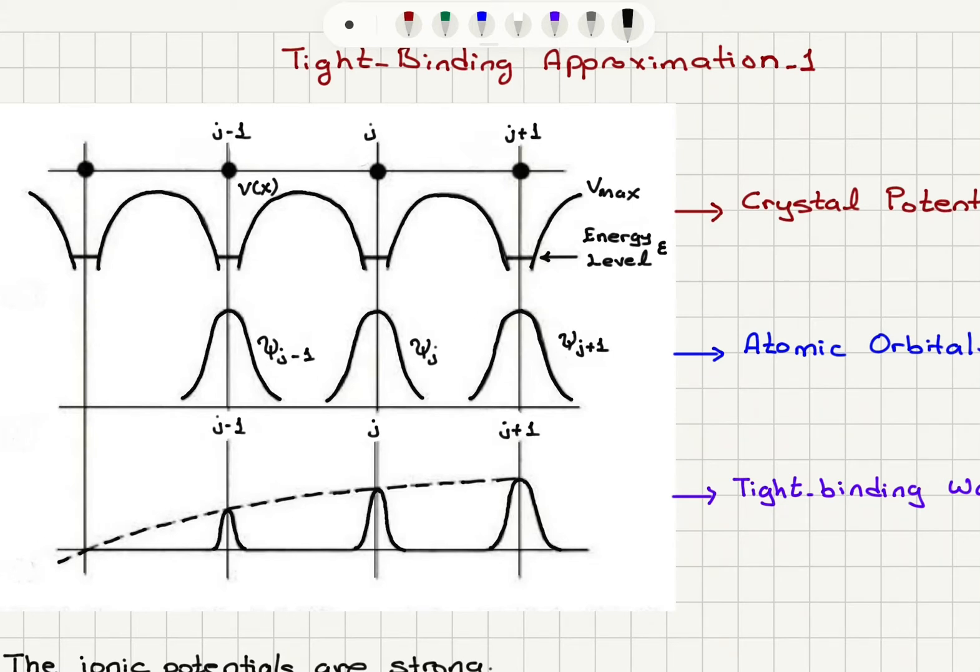And we're concentrating on an energy level so this could be a low-lying orbital of the electron like the S state and there is a maximum value Vmax.